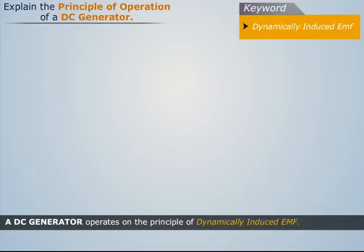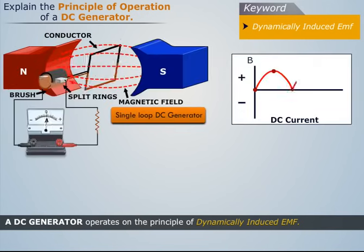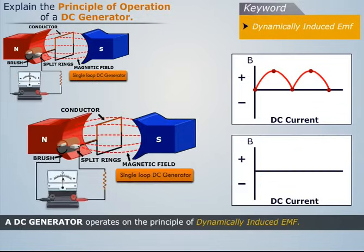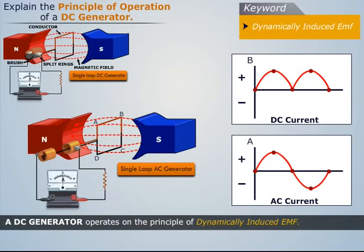Now let's discuss how a DC generator operates. Consider a simple loop generator. Let's rotate its single turn rectangular coil, say ABCD, about its axis in the magnetic field. Note that both the permanent magnet and electromagnet can be used to produce the required magnetic field.